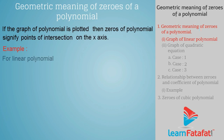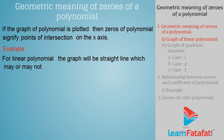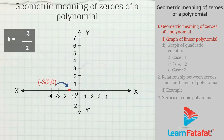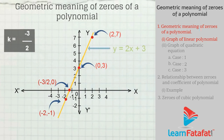For example, for a linear polynomial, the graph will be a straight line which may or may not intersect the x-axis. Suppose y = p(x) = 2x + 3. Then 0 = p(k) = 2k + 3, that is, k = -3/2. Plotting k = -3/2 and other points and then joining them, we get y = 2x + 3.